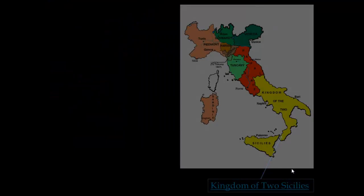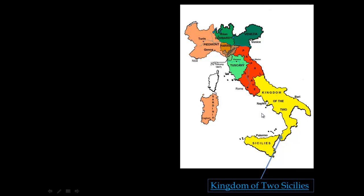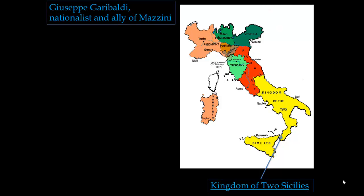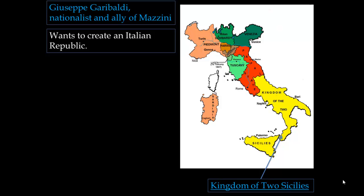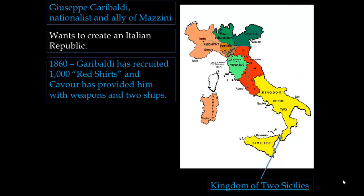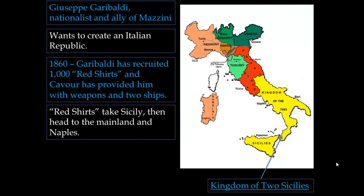The next key figure deals with southern Italy — the Kingdom of the Two Sicilies, the island of Sicily and the area of Naples. This is Giuseppe Garibaldi, a nationalist and ally of Mazzini who, like Cavour, wants to create an Italian republic. Over the years he builds up support, and by 1860 he has recruited 1,000 fighters known as Garibaldi's Red Shirts. Cavour provides him with weapons and two ships, since crossing water is necessary to reach the Kingdom of the Two Sicilies.